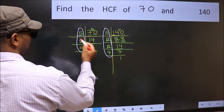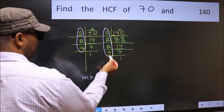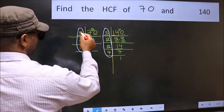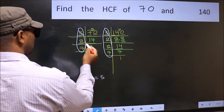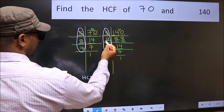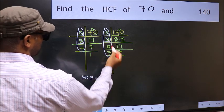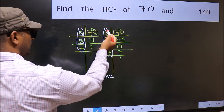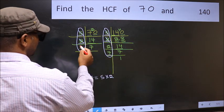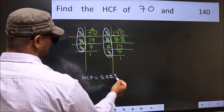Starting with the number 5. Do we have 5 here? Yes. So cut 5 right here. Next number 2. Do we have 2 here? Yes. So cut 2 right here. Next number 7. Do we have 7 here? Yes. So cut 7 right here.